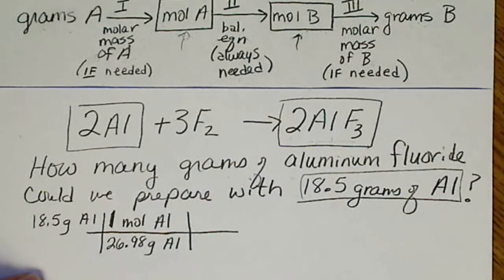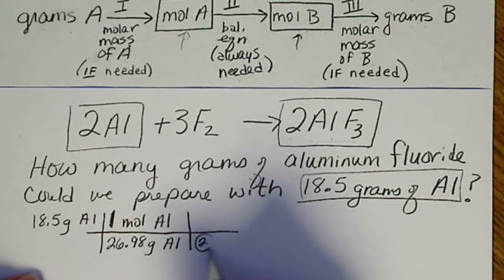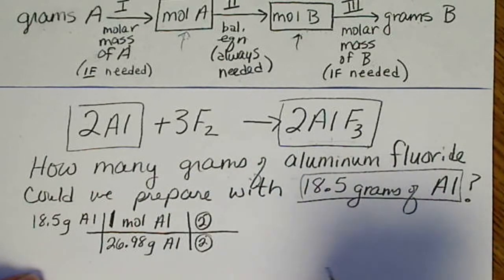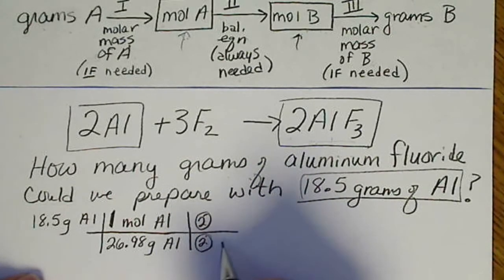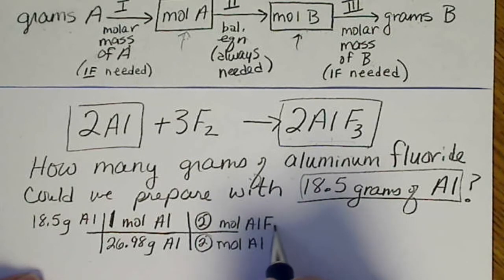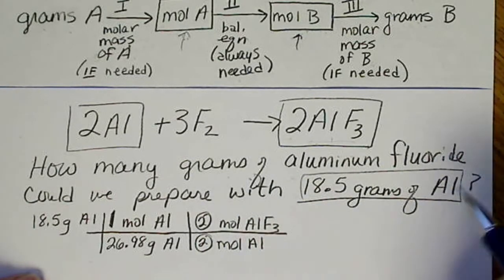And now we can go to the periodic table, and there's two, the ratio is two to two. We could put one to one, but I'm always going to consistently put the balanced equation numbers just as they are in the balanced equation.